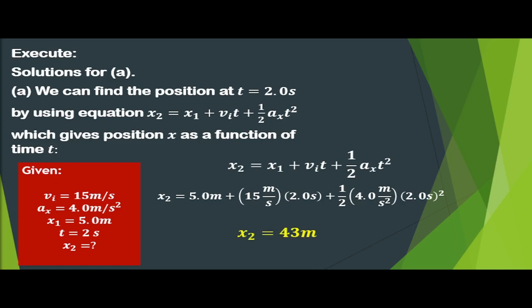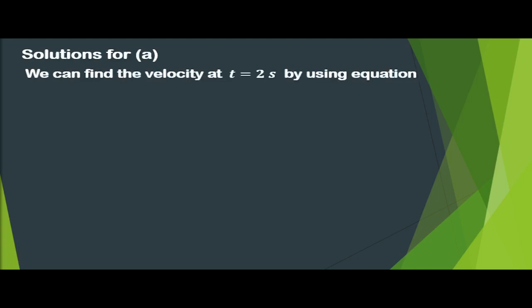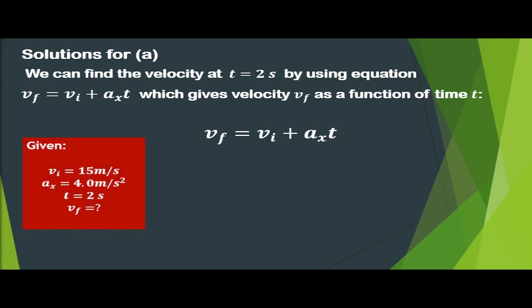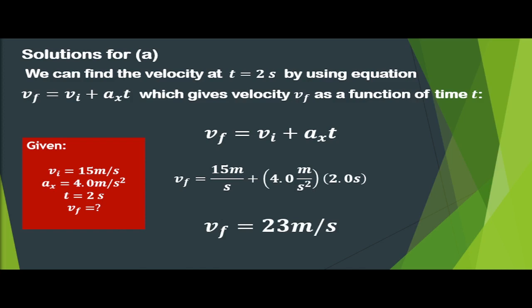We can find the velocity at t = 2 seconds using the formula v_f = v_i + a_x × t. Substituting: v_f = 15 meters per second + (4 meters per second squared)(2 seconds), giving v_f = 23 meters per second.